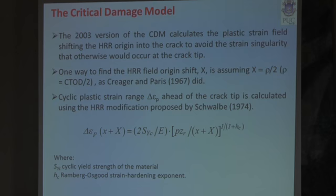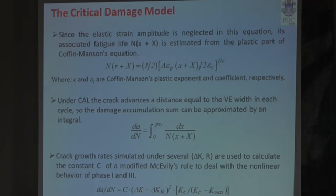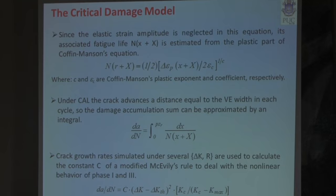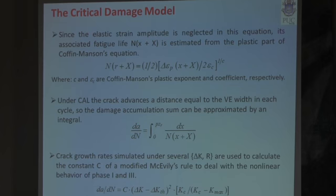With that, the size of the plastic strain range ahead of the crack tip is calculated using a modification proposed by Schwalmann. Since the elastic strain range amplitude is neglected in this equation, the associated fatigue life is estimated from the plastic part of the Coffin-Manson equation. And in the case of constant amplitude loading, the crack advances a distance equal to the volume element width in each cycle, so the damage accumulation sum can be approximated by an integral. It is thus possible to determine or estimate the fatigue crack growth rates.